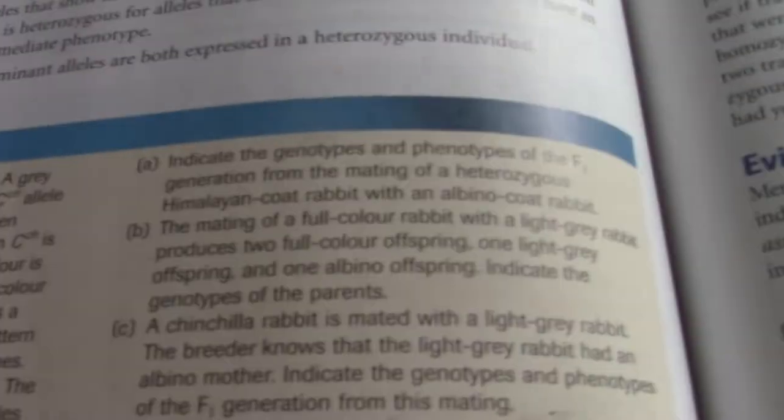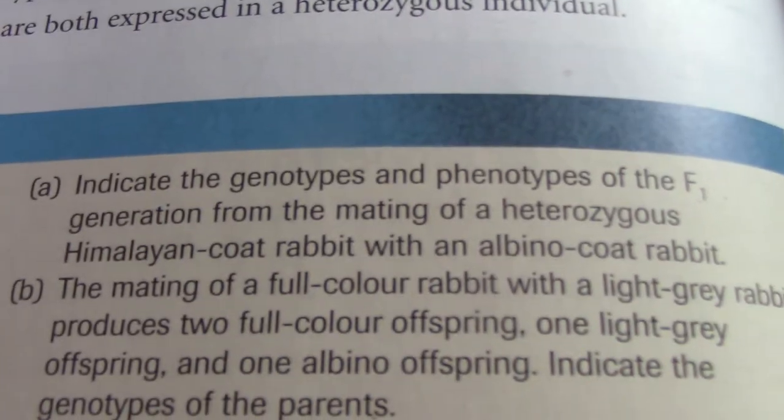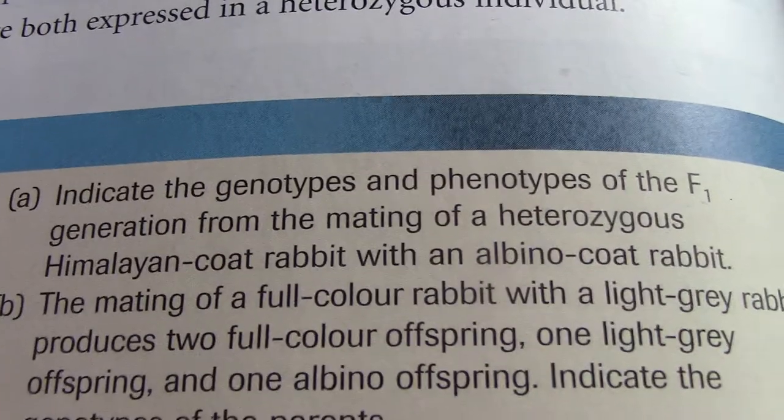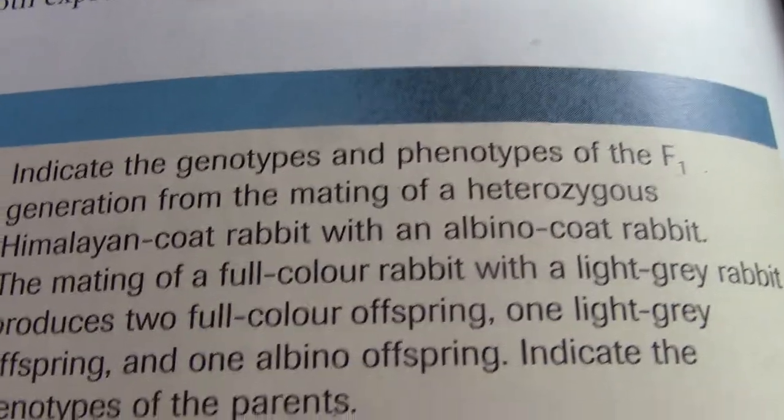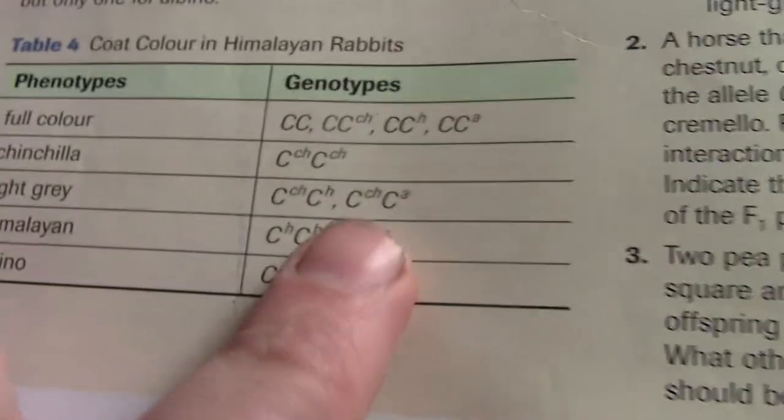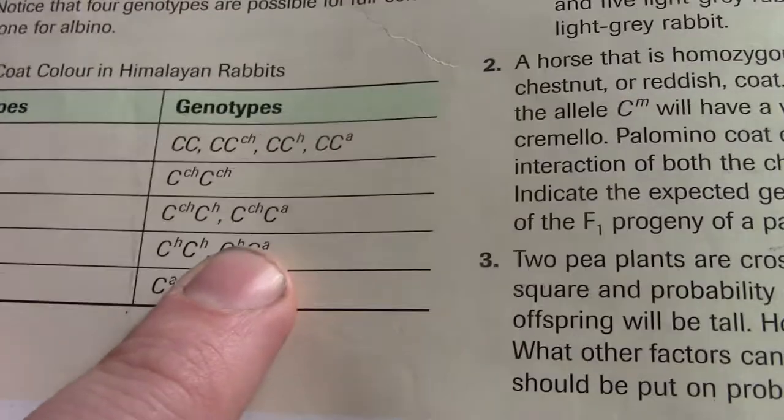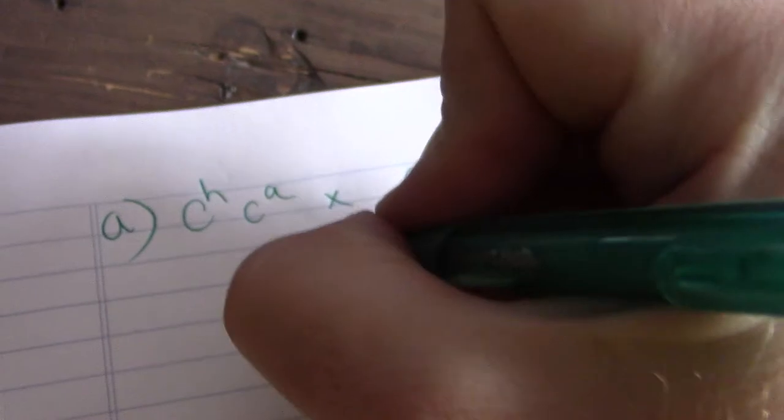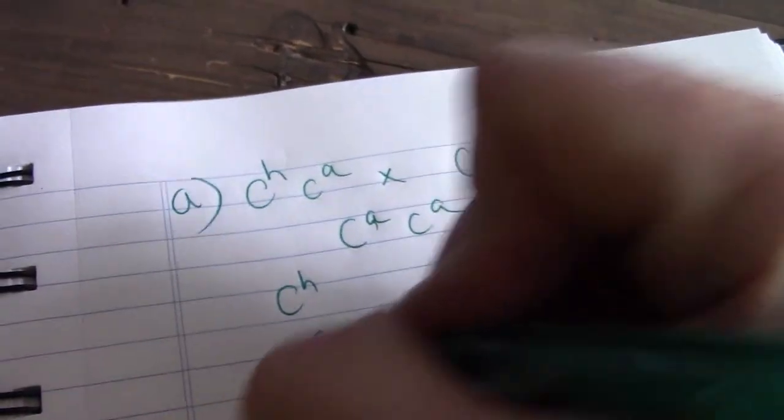So A says indicate the genotypes and phenotypes of the F1 generation from the mating of a heterozygous Himalayan coat rabbit with an albino coat rabbit. So here's my chart. Himalayan, heterozygous Himalayan, and an albino. So I have CHCA times with the albino. So I've got CACA, CHCA.